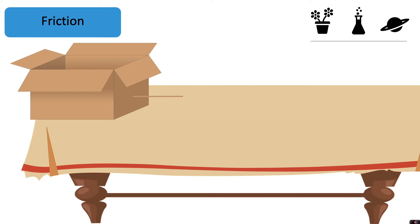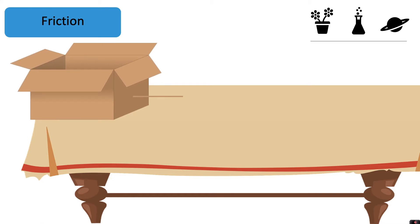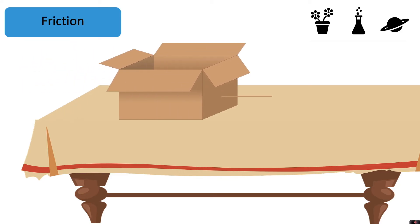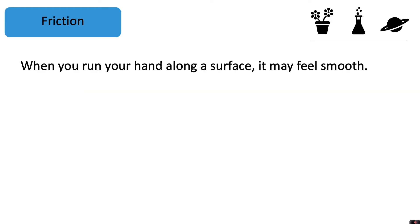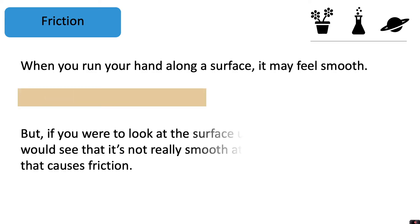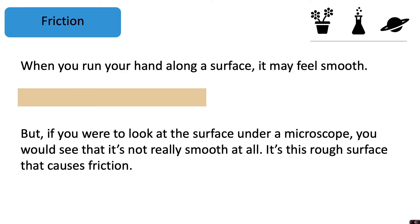If we try to move this box along this table, we can see that the box would experience friction and it might be difficult to move at first. But if we apply a larger force we can eventually cause that box to move. The table surface looks smooth, and when you rub your hand along it, it may feel smooth. But if you were to look at that surface under a microscope you would see it's not really smooth at all — it's this rough surface that causes friction.